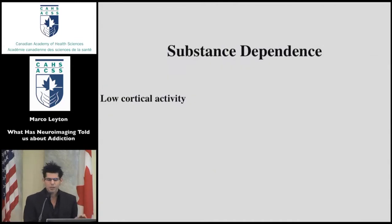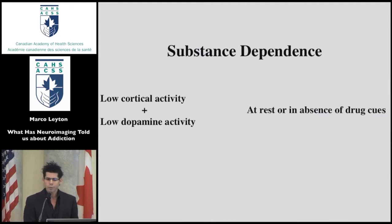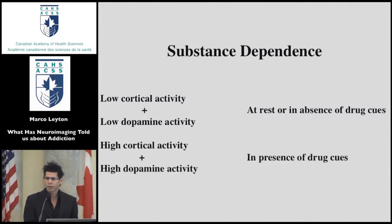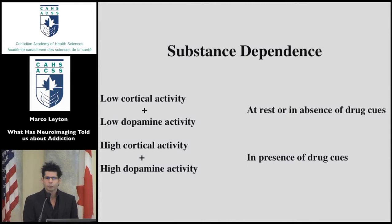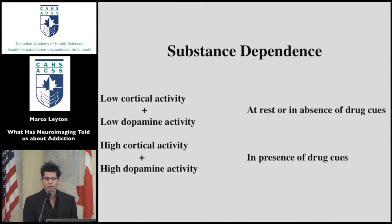In summary, there have been three very consistent findings in individuals in late-stage addiction: they have low cortical activity and low dopamine activity at rest and in the absence of drug-related cues, but high cortical activity and high dopamine activity when tested in the presence of drug-related cues. These are important distinctions — usually when people are taking drugs, cues are present. When drugs are absent, brain function in limbic systems may be actively inhibited, and this may play an important role in the very selective narrowing of interests that is a hallmark of addiction.